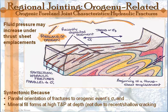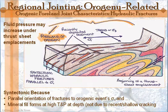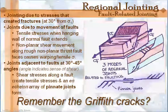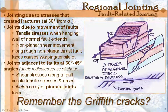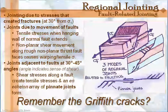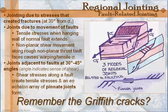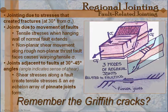We're going to talk more about orogenic forelands because they're very significant. Now, the next kind of jointing we want to stress is jointing that is related to faulting. A lot of the jointing that you'll see is related to regional faulting. There are three specific kinds of jointing closely related to faulting that takes place.